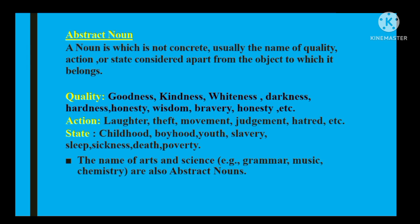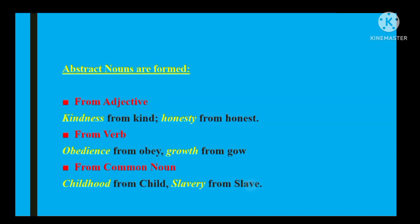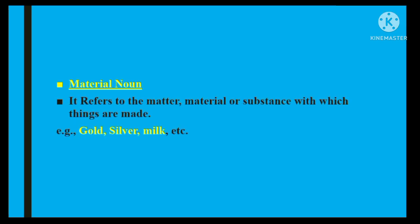Arts aur science ke naam jaise grammar, music, chemistry — yeh bhi abstract noun mein consider hote hain. Abstract noun banane ke kuch tareeqe hain: ya to adjective se bana sakte hain, jaise 'kind' se 'kindness'; verb se bana sakte hain, jaise 'obedience', 'growth'; ya common noun se bana sakte hain, jaise 'child' se 'childhood', 'slave' se 'slavery', waghaira.